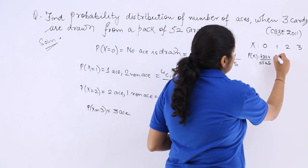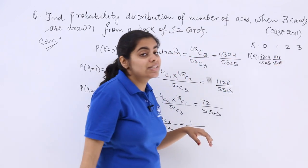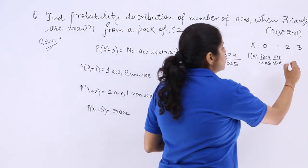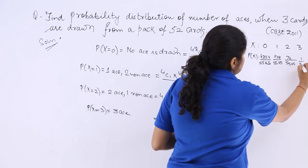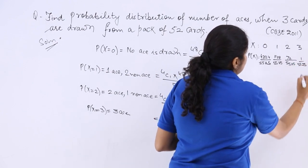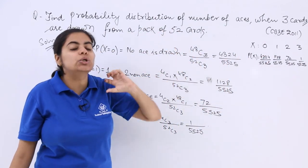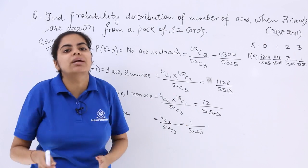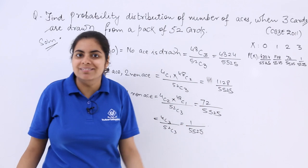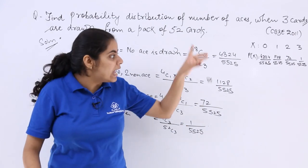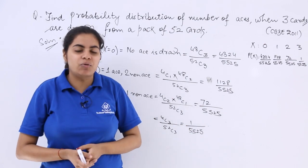Here it was the next 1128 over 5525. For this one it was 72 over 5525, and last but not the least, 1 over 5525. Now if you add all these up, although the answer is complete, I want you to know the method to check whether you have done the correct solution or not. If you add all these, you will get 1, and that is what is the funda of probability distribution. Adding all these possible cases gives you 1, and that completes your question.